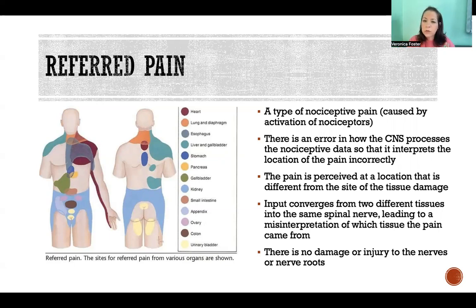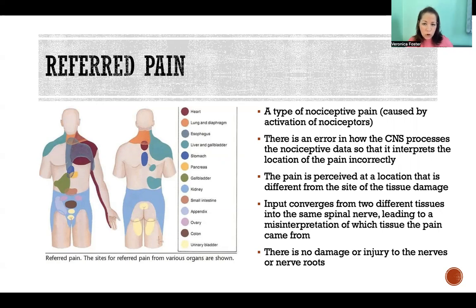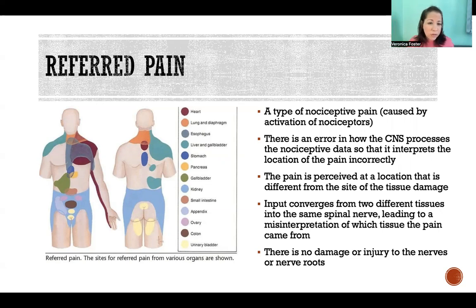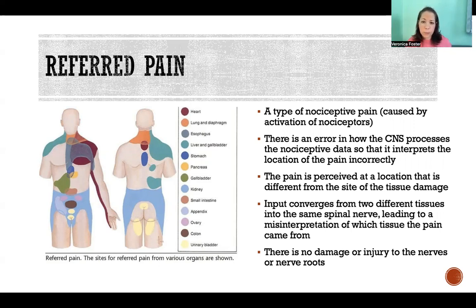Sometimes in those scenarios, there's an error in how the central nervous system interprets where that pain information came from. So if there's damage to tissue coming from one area, and it's converging with the sensory input from another tissue or organ or structure into the same pathway, sometimes the central nervous system can make a mistake and misinterpret where the damaged tissue is actually coming from. And so that's what referred pain is.